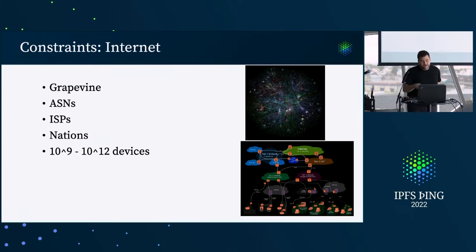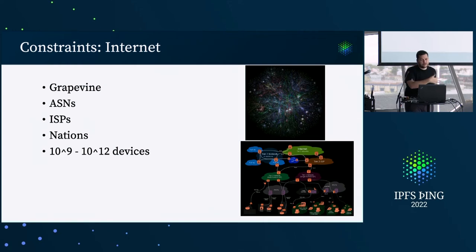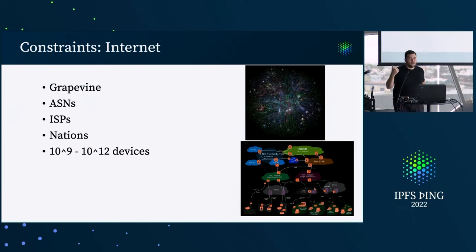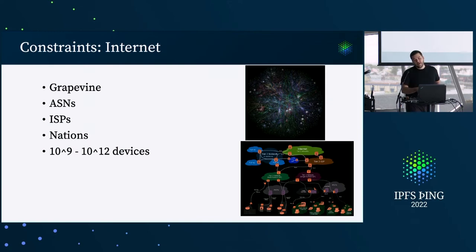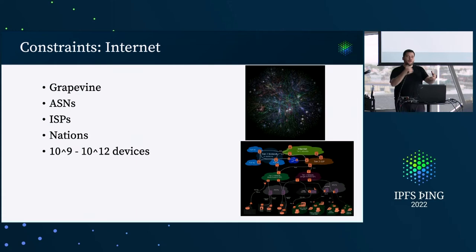One other useful thing to think about is that the grapevine of the internet exists because of both physical, hardware, and regional constraints, but also because of economic constraints. The internet grapevine over time evolves to match the applications that are driving traffic through it, and once the grapevine looks a certain way, applications tune for that grapevine. Over time it sort of settles, however you can shift it.